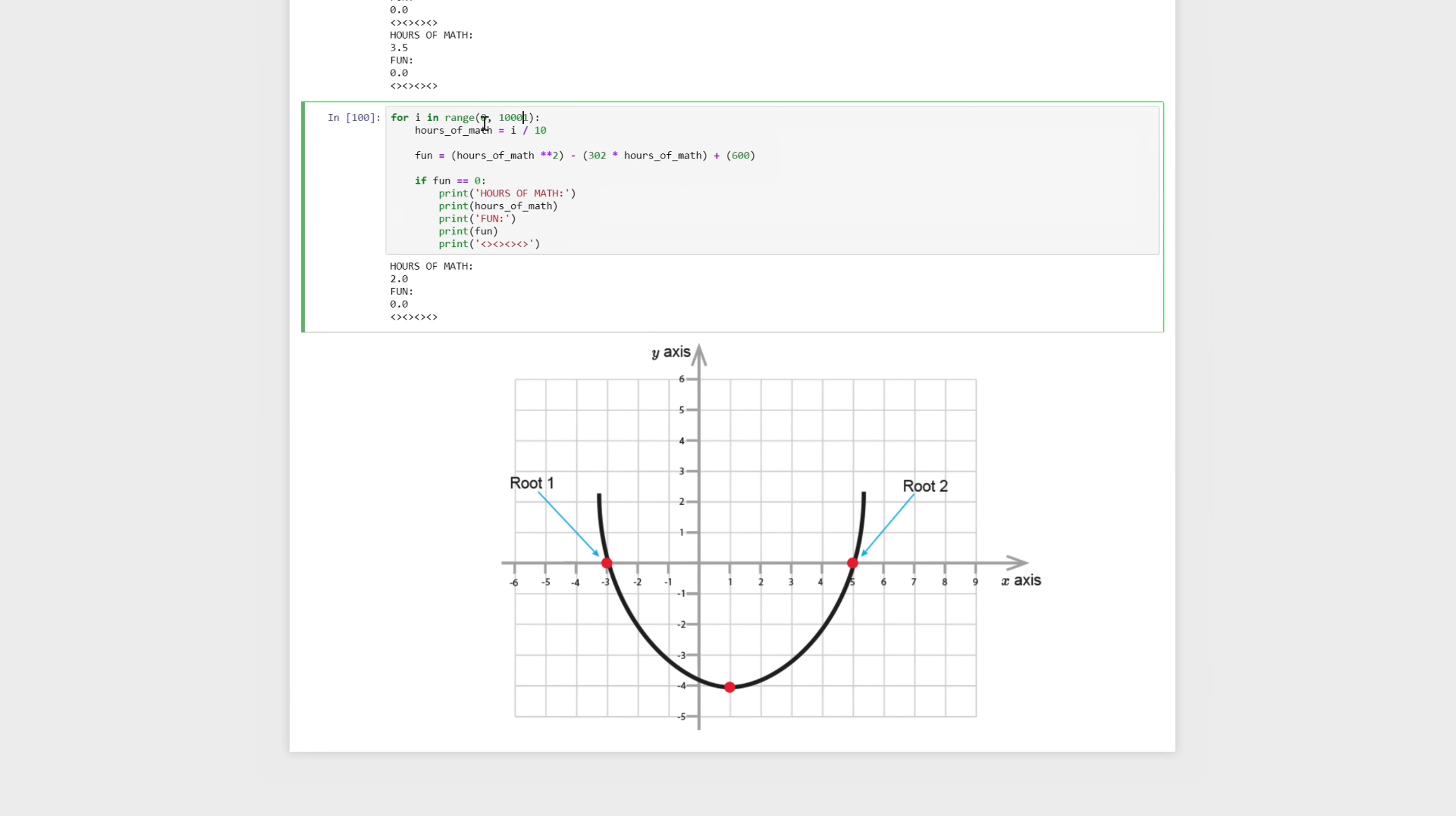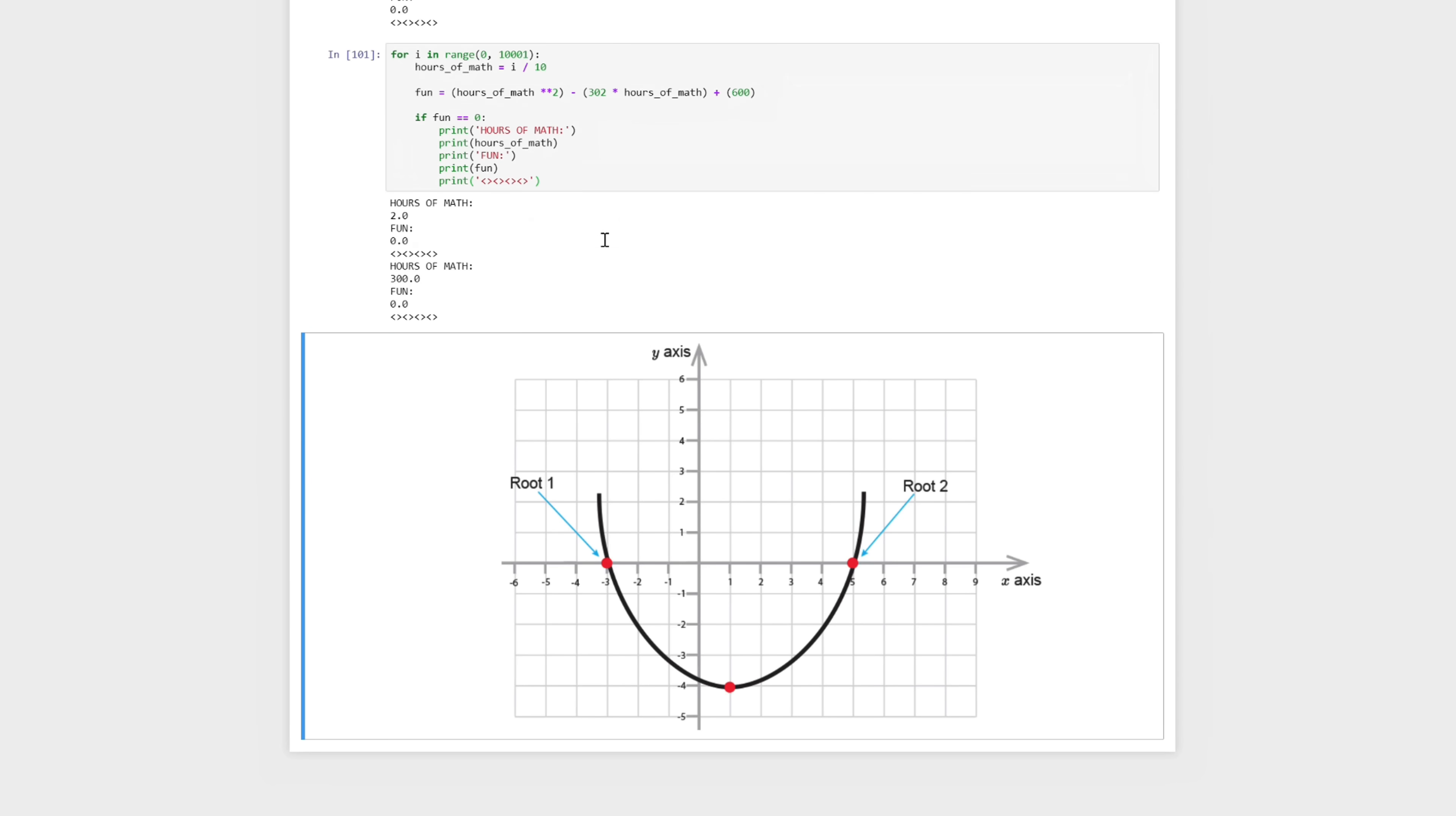So instead of checking between 0 and 100, which translates to 0 and 10, let's go between 0 and 10,000, which translates to 0 and 1,000 in intervals of 0.1, and check that. So now instead of just looking at things between 0 and 10, we're looking at 0 and 1,000. And hopefully we'll be able to find the root there. And we are able to find the other root. So the other root was at 300, which you wouldn't have been able to find the first way we were doing it.